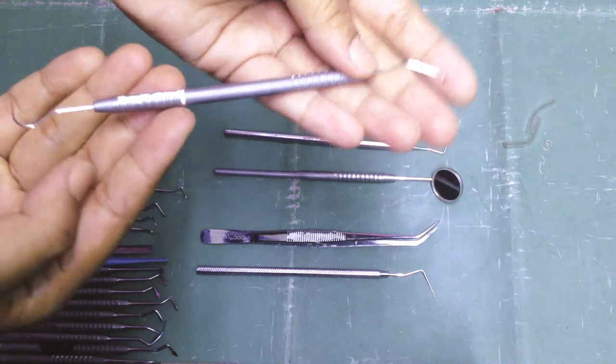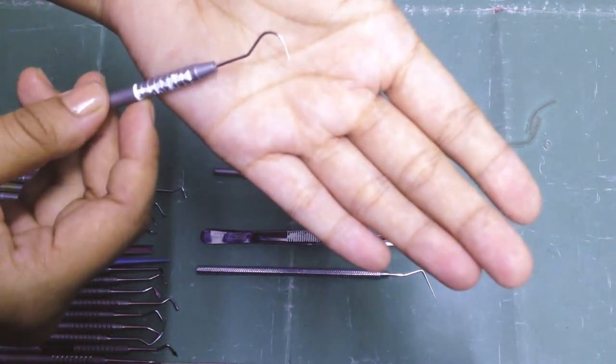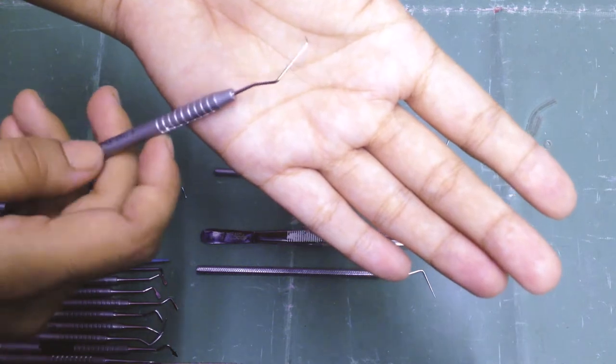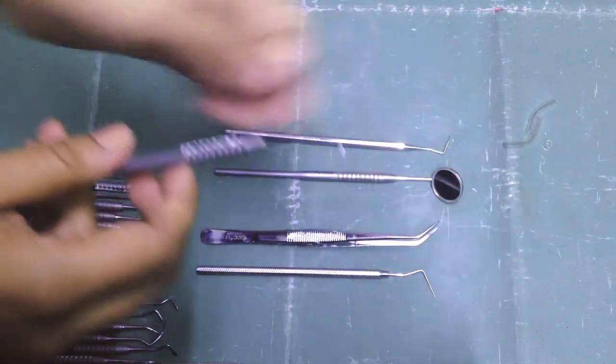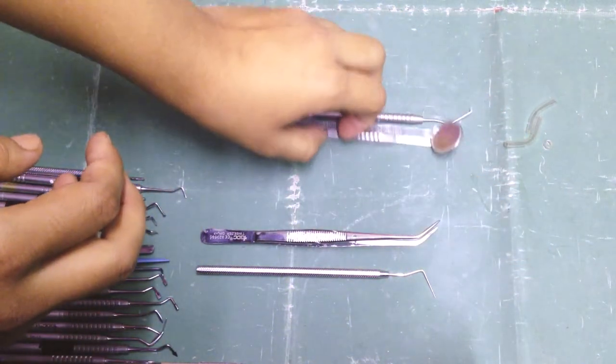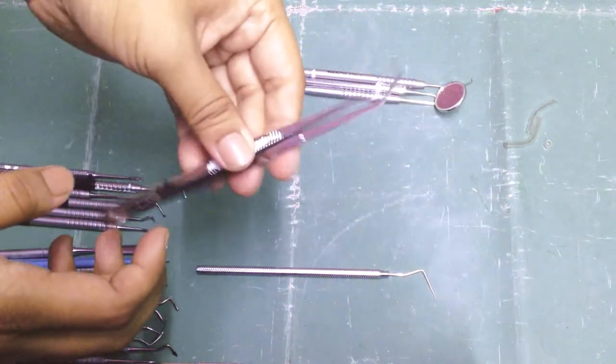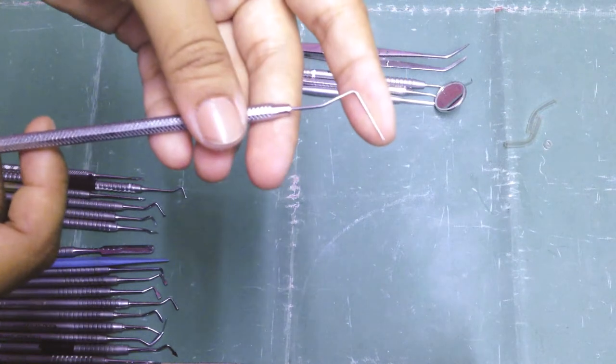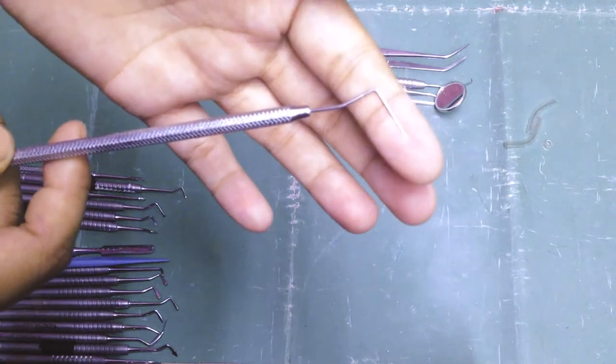This is a double-ended instrument. As you can see, this is a shepherd's hook or curved explorer, and this is an interproximal explorer, also called Bright's explorer. Then we have tweezers. We also have some periodontal probes, and this particular one is a Williams periodontal probe.